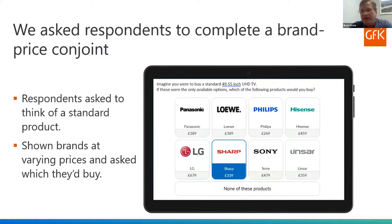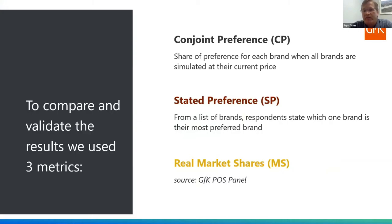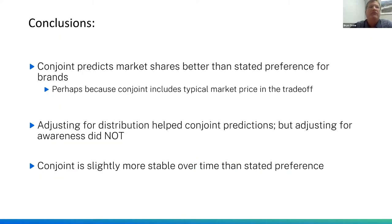The two cells compared whether respondents got a conjoint tracker or a traditional brand tracker asking what brand they prefer. Respondents in the conjoint tracker group saw choice tasks where brands were shown with prices, and could pick none if they didn't like the options. Some respondents also got stated preference trackers. Results were compared against GFK's POS panel, which represents real market shares for these categories.